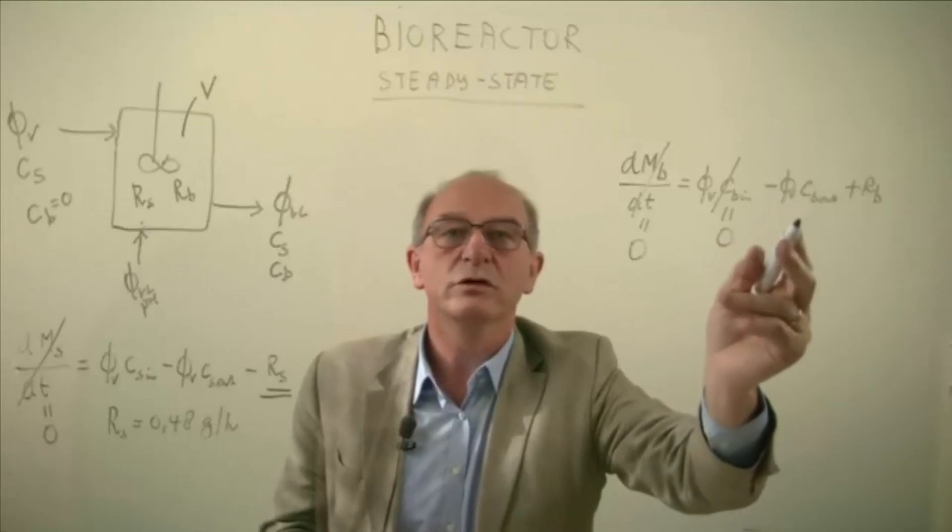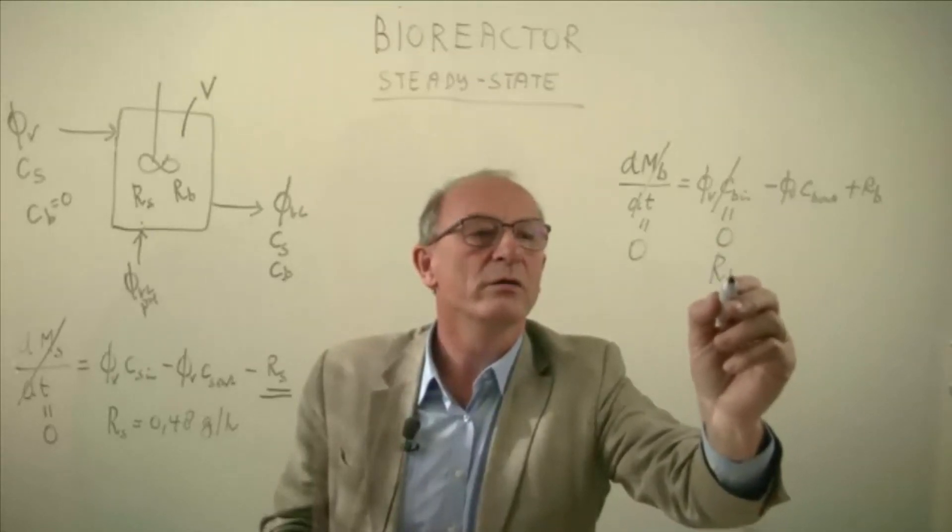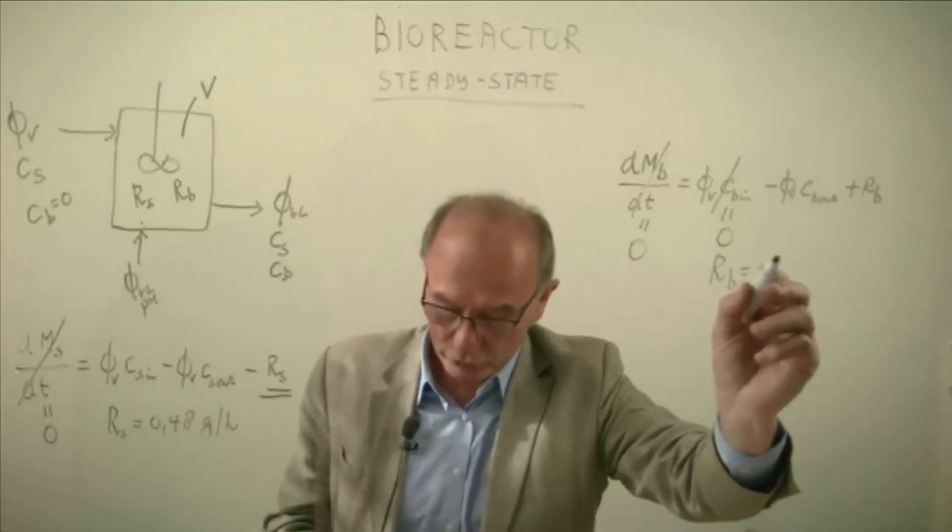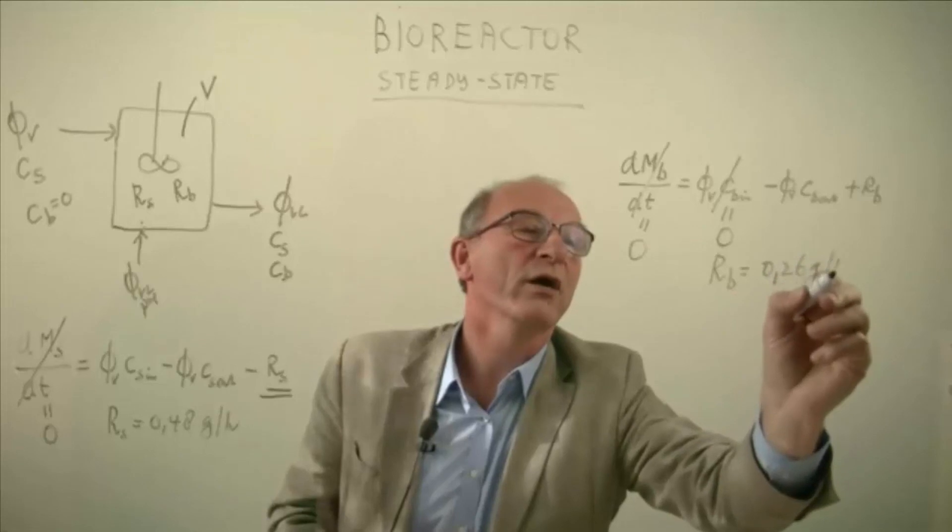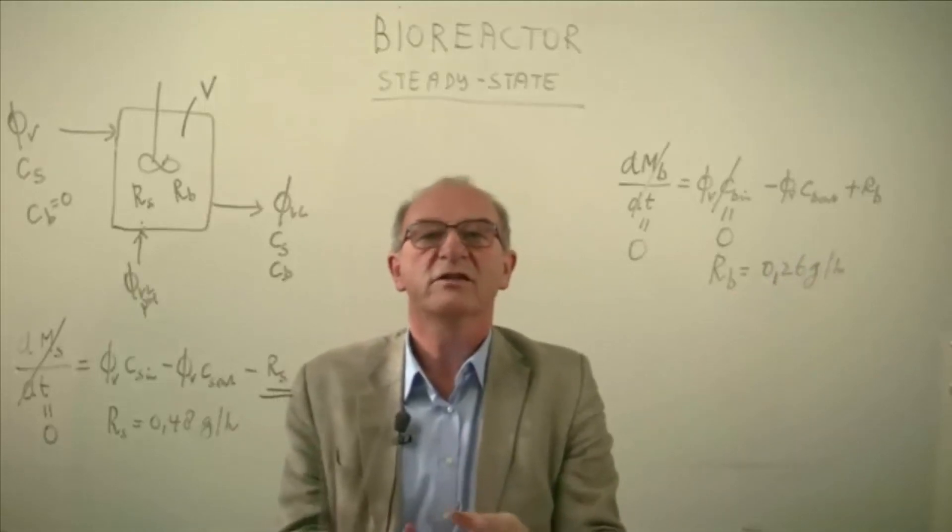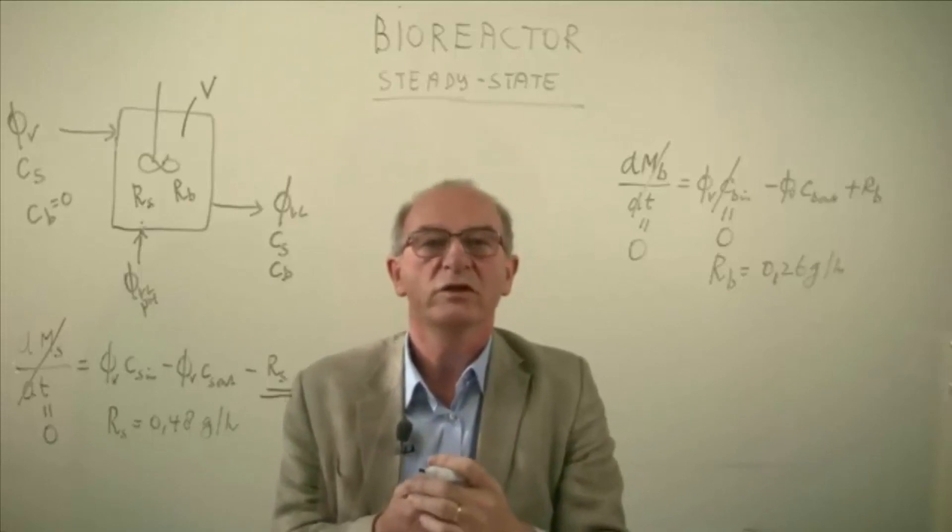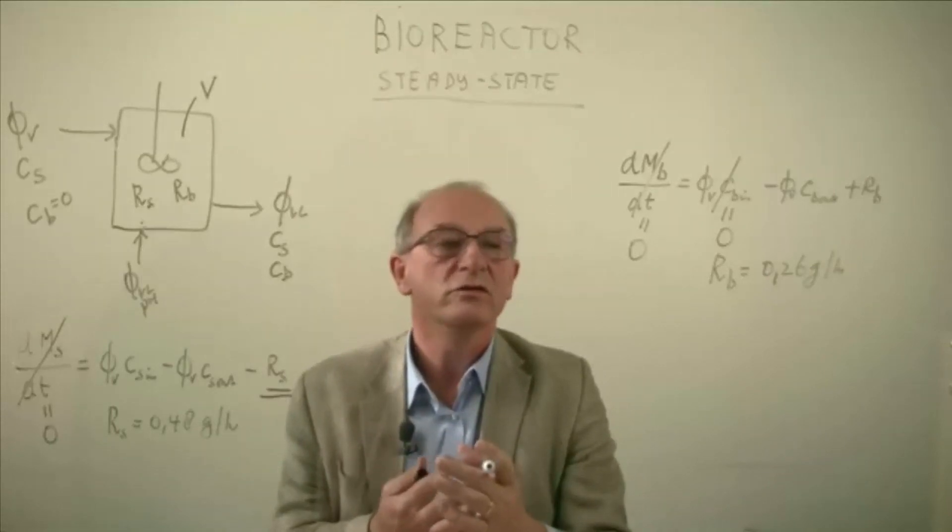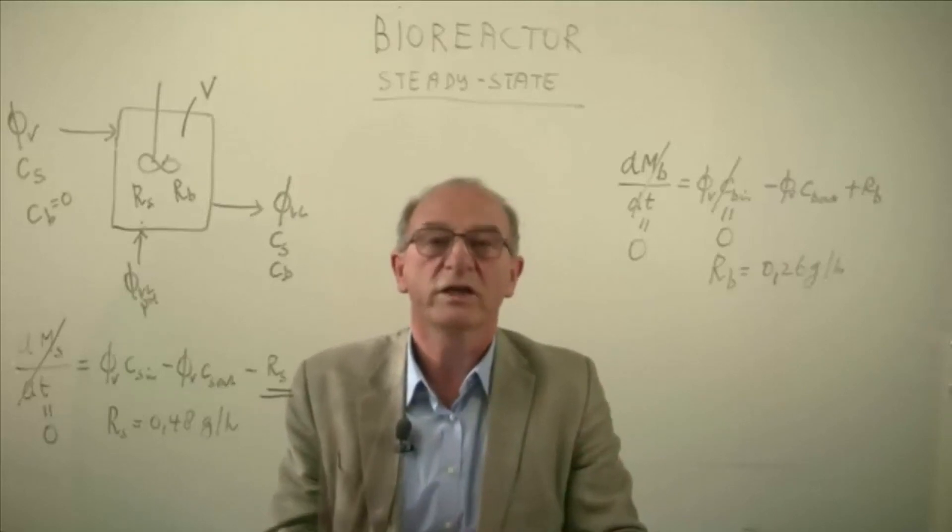Now we only have to substitute the values we already know and then we get a value of Rp which is equal to 0.26 grams per hour. So you see in this example that if you have a chemical reaction in a vessel under steady state conditions, you can calculate the conversion rates in the vessel. Thanks for your attention.